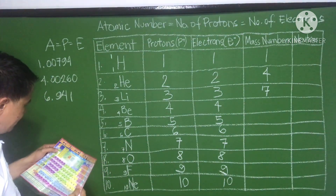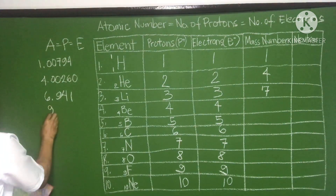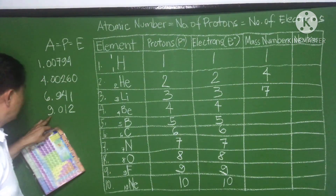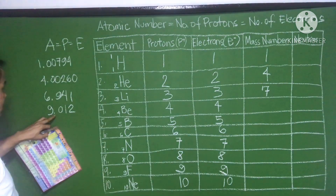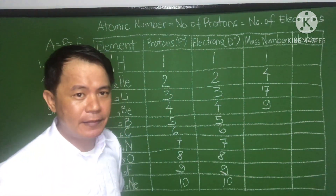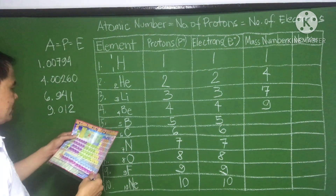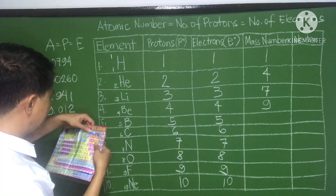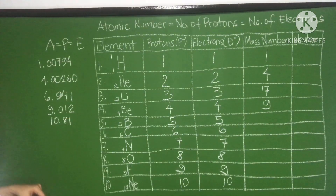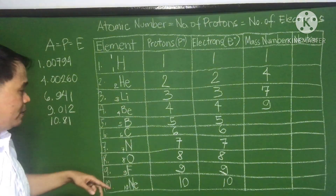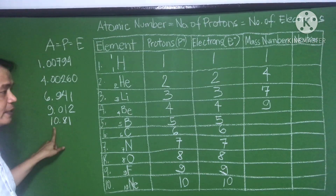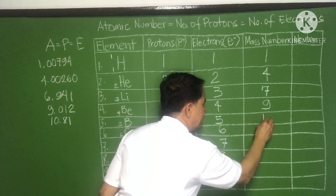For beryllium, the atomic weight is 9.012 — round that off, retain the number, and the mass number is 9. For boron, the atomic weight is 10.81 — since .8 is greater than 5, add 1, and the mass number is 11.